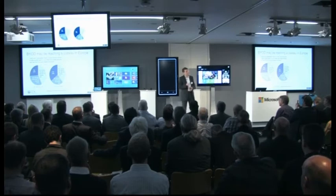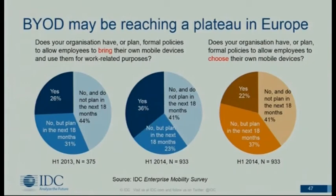So for all those reasons, what we're seeing in Europe now is an increasing preference for CYOD — choose your own device — whereby the employer has a list of devices from which the employee can select the one they want, the list varying according to role. In principle, this represents a gravitation of the selection and procurement of mobile devices back away from the employee and back towards the corporate IT department, which has significant implications for future patterns of adoption.